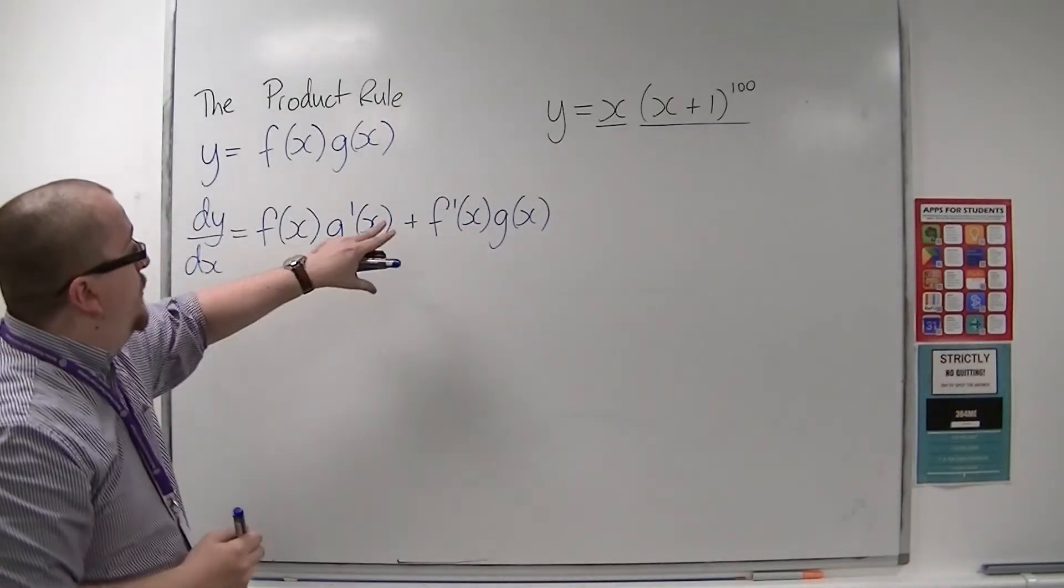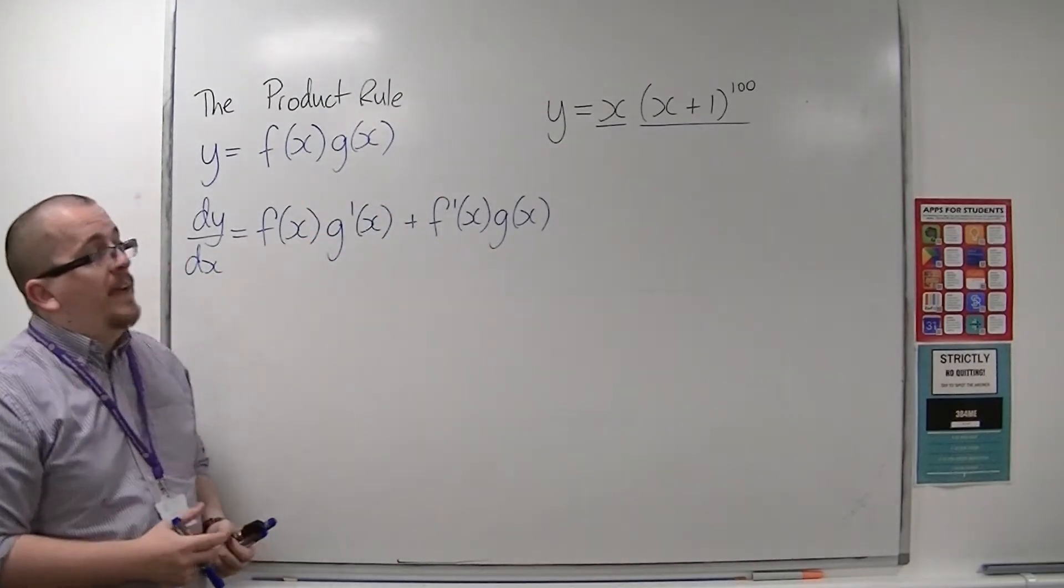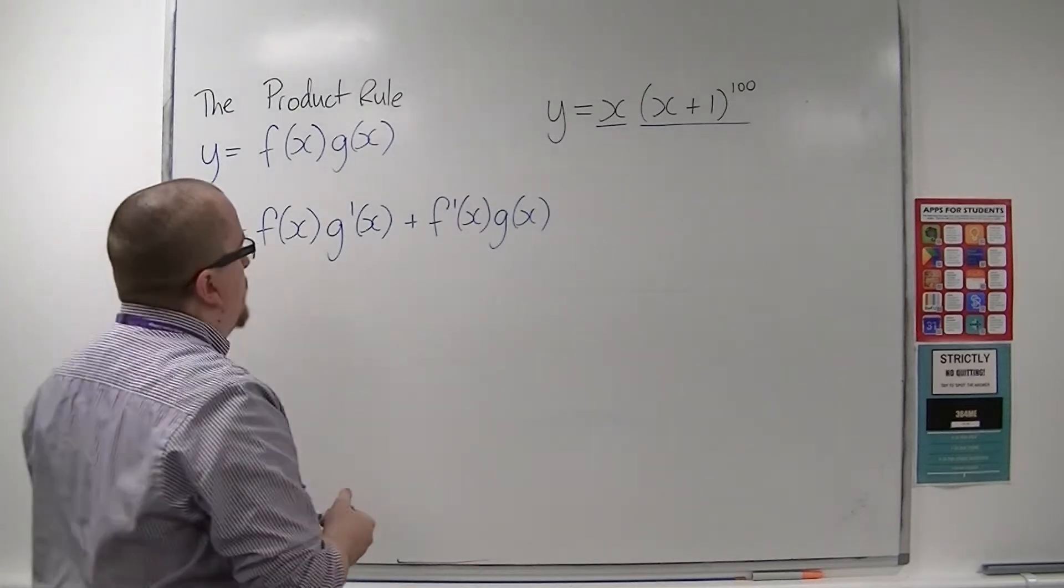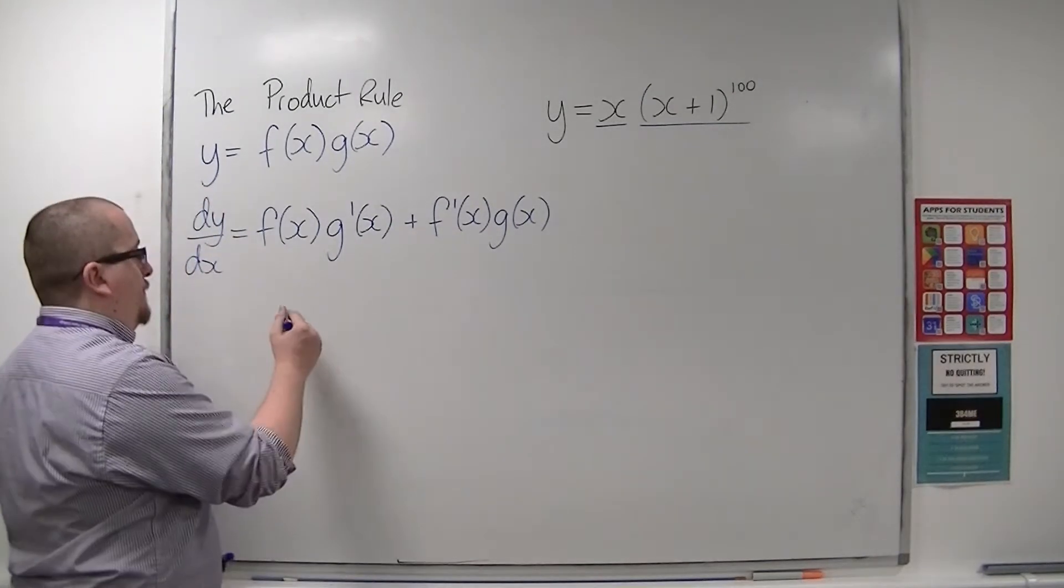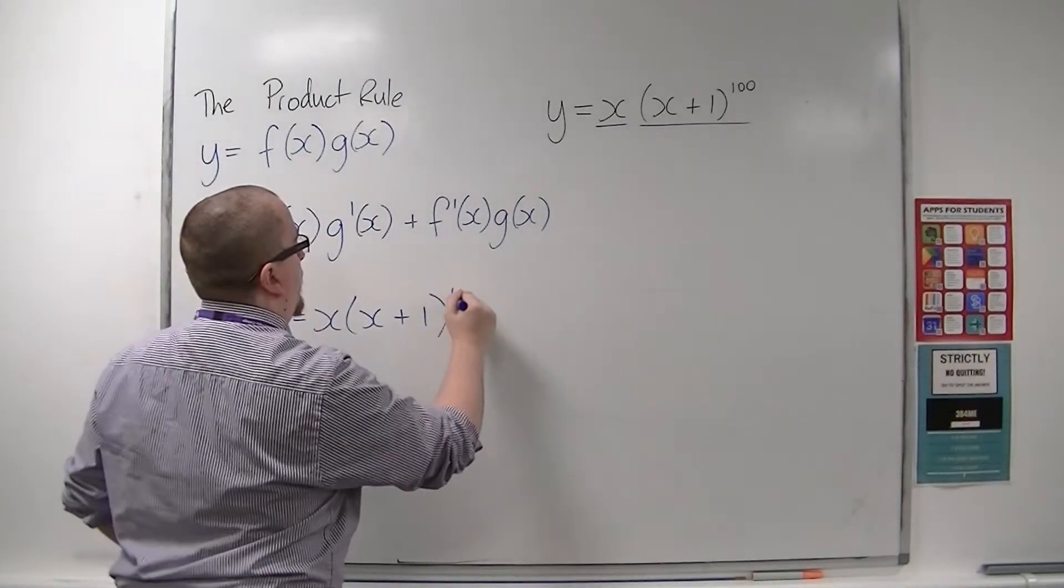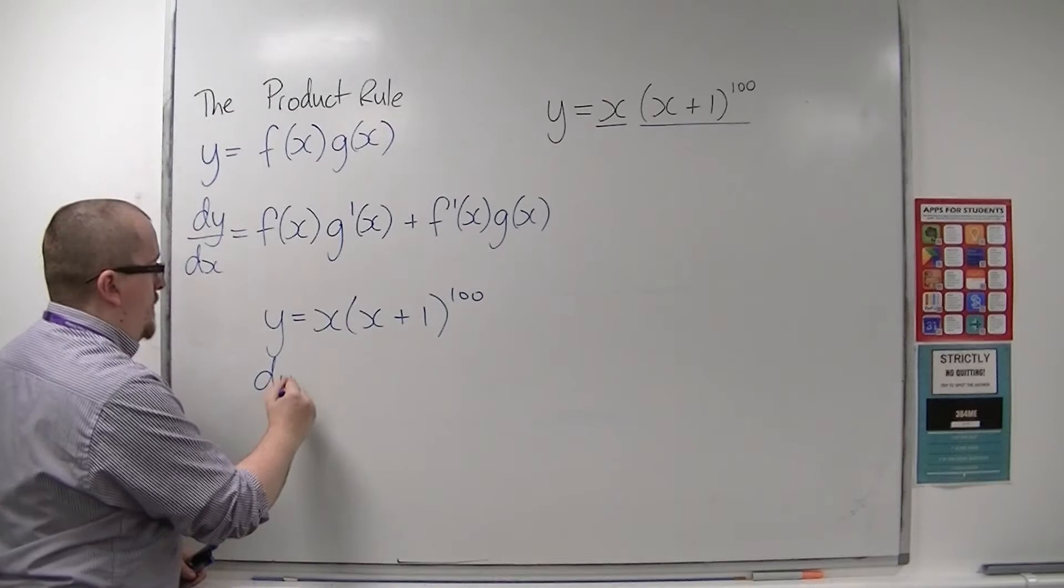And we're going to use that in order to differentiate y is equal to x times x plus 1 to the 100. So the first thing that we're going to do, if I rewrite it down here, then dy by dx.